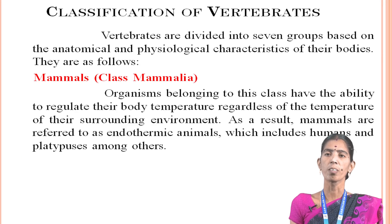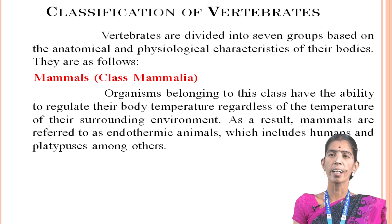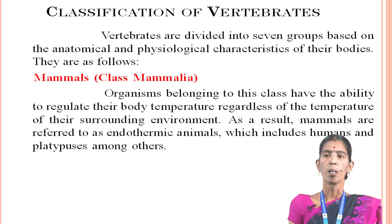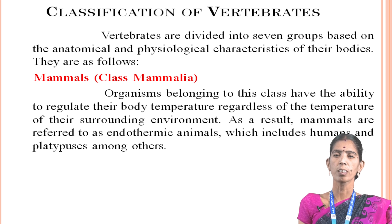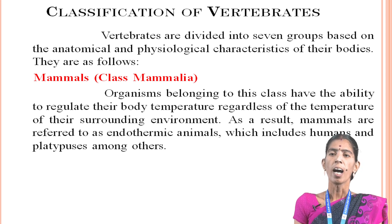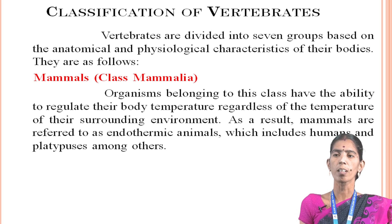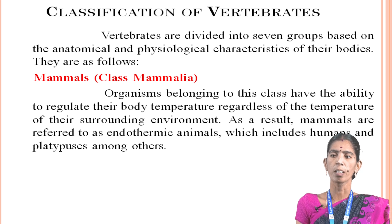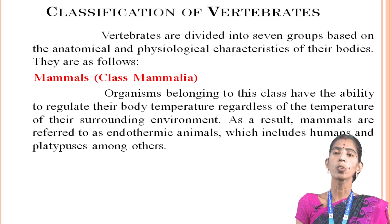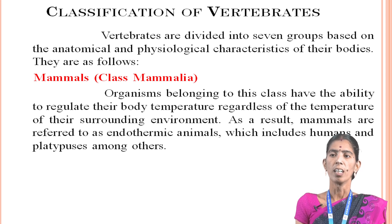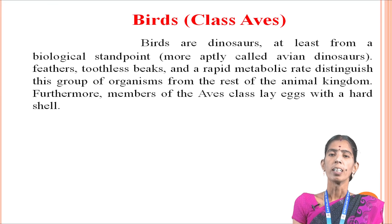Classification of vertebrates: vertebrates are divided into seven groups based on anatomical and physiological characteristics of the body. The first is mammals, class Mammalia. Organisms belonging to this class have the ability to regulate body temperature regardless of the temperature of the surrounding environment. As a result, mammals are referred to as endothermic animals, which includes humans and the platypus among others.